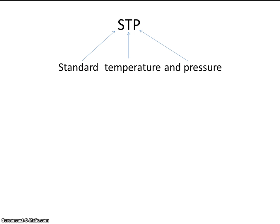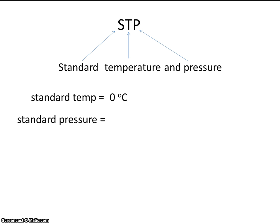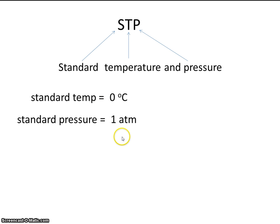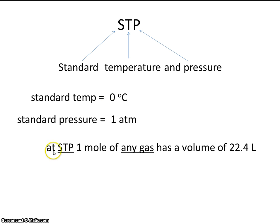Here are the conditions. Standard temperature will be 0 degrees Celsius. Standard pressure will be 1 atmosphere. We're going to learn what an atmosphere is later in the year, but an atmosphere is about the pressure that we're under right now — about room pressure. You can think about STP being similar to conditions outside on a cold day.